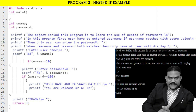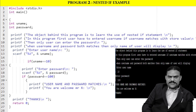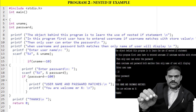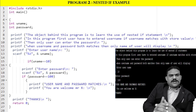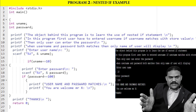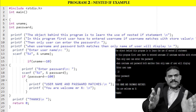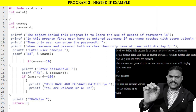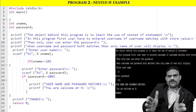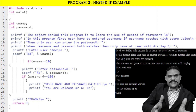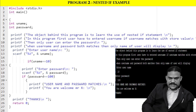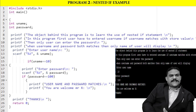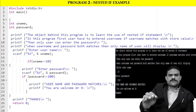Looking at the program: the first statement is #include stdio.h, linking the stdio.h file. The main function starts with curly bracket. We declare two integer variables: username and password. The username and password values entered must be integer values.